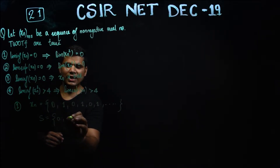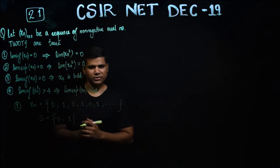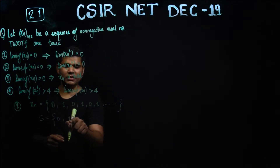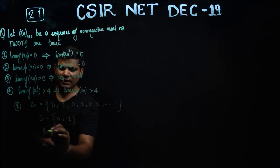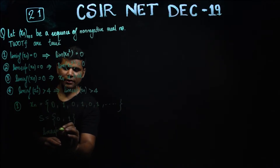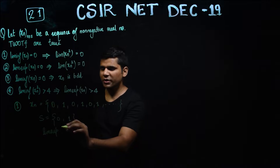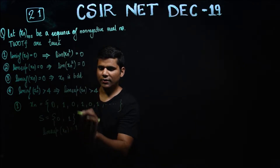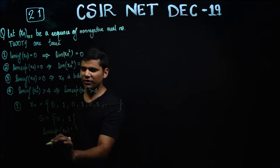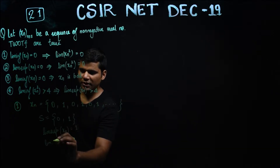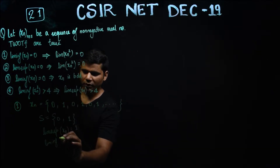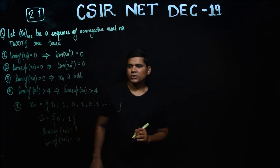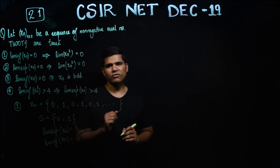In the theorem, S represents the set of limit points. The maximum of this set is 1, so the limit superior of this sequence is 1. And the limit inferior will be 0. So these are the two values we can evaluate right now.